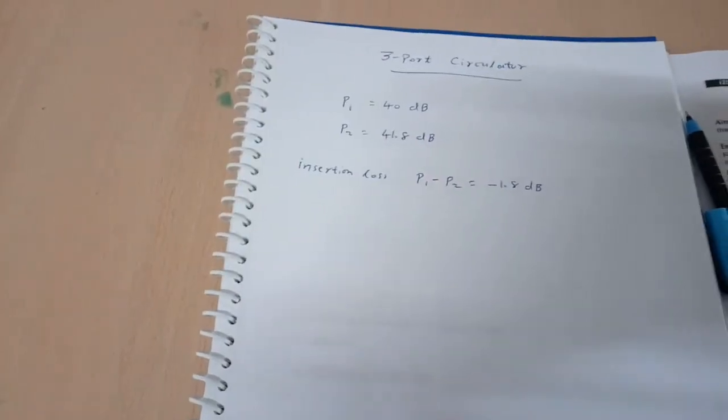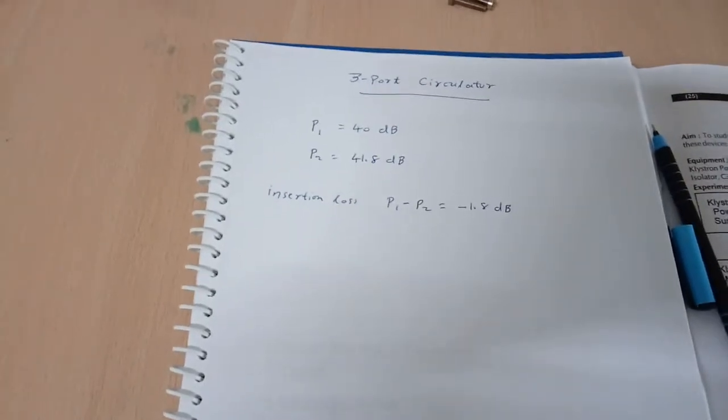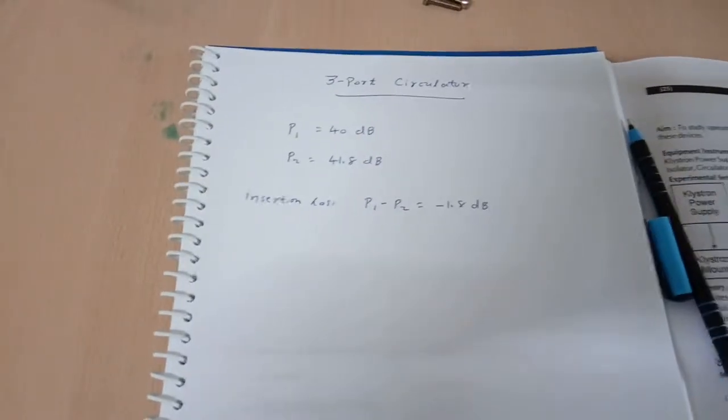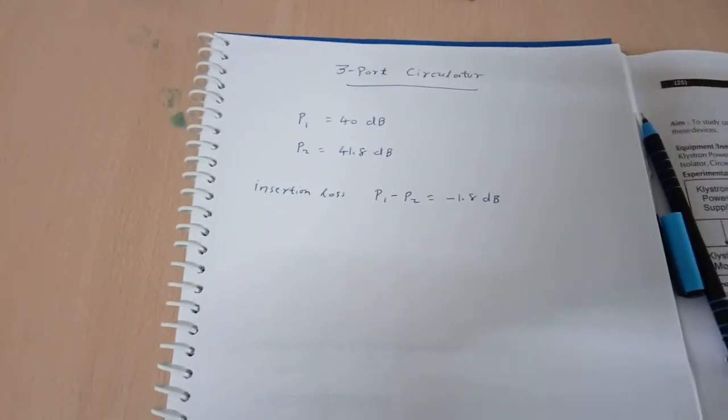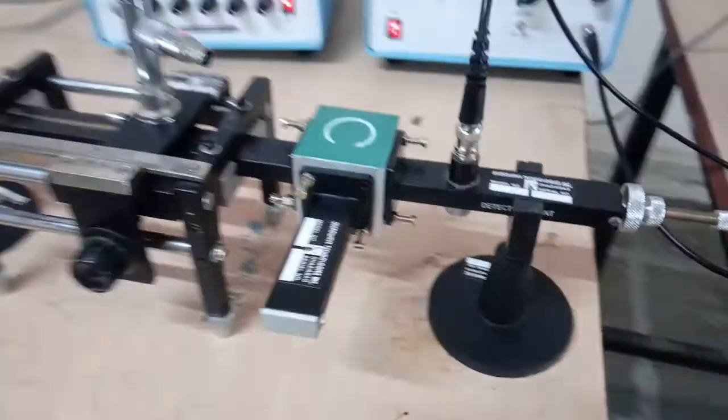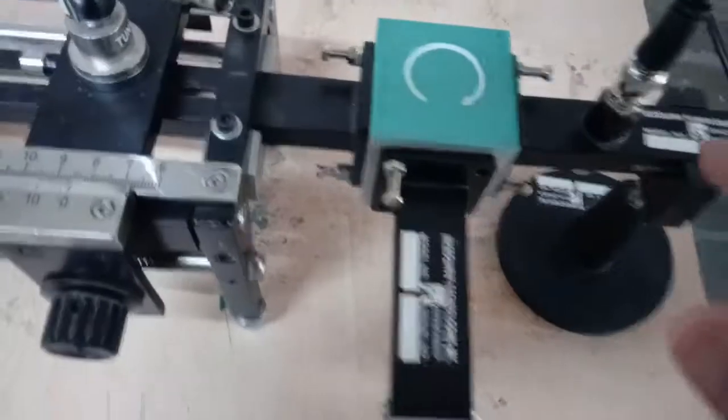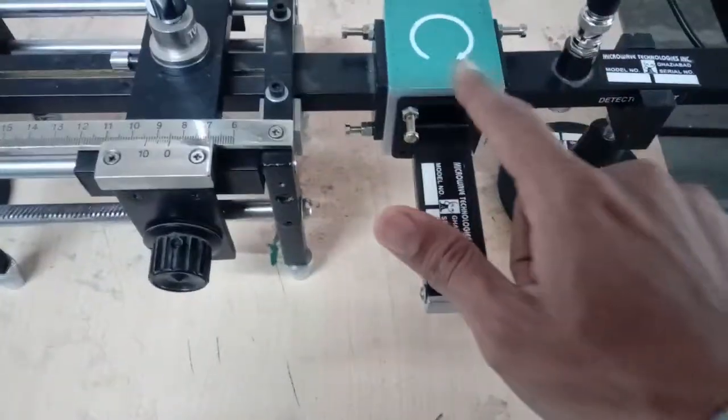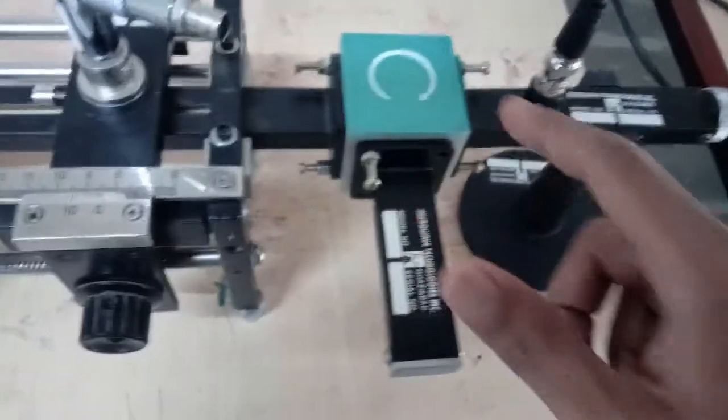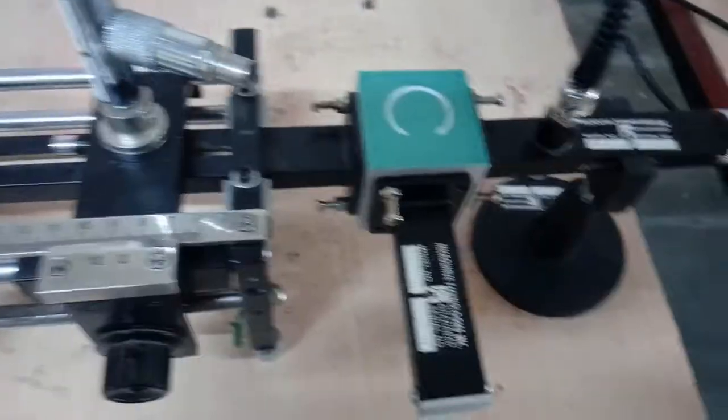We know the circulator operates on the principle of Faraday rotation. The multiport device, as we provide the input at first port, it will provide the output at second port, not at third port. At third port we will get isolation. So now we will check this detector mount by connecting at port 3. This match termination will be connected to port 2 and we will check the isolation between port 1 and port 3.